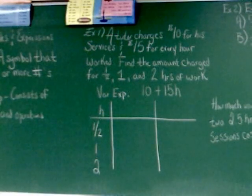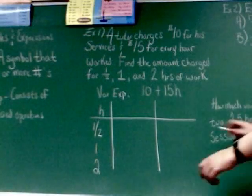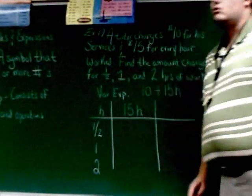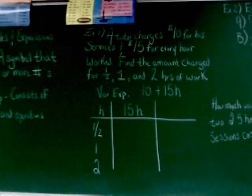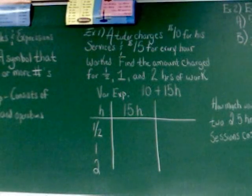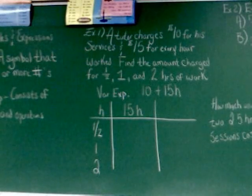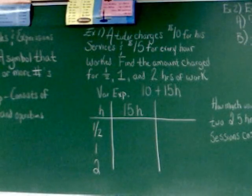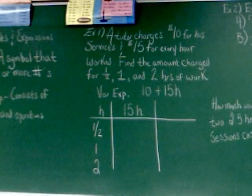The next box is for fifteen H. In that box they want you to multiply H by fifteen. So in the first box, we have to find out what half of fifteen is. What's half of fifteen? Seven. Seven point five, or seven dollars and fifty cents. Good.